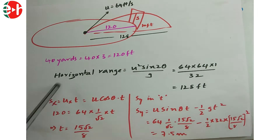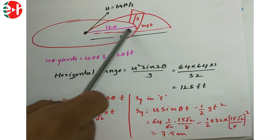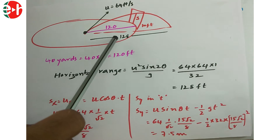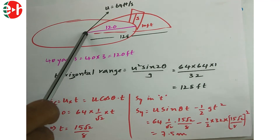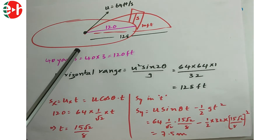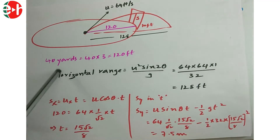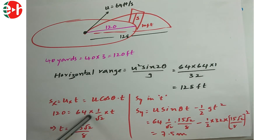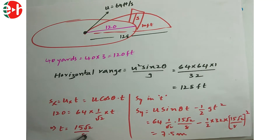Finding the time when horizontal displacement equals 120 feet: Sx = u·cos θ·t → 120 = 64×(1/√2)×t, giving t = 15√2/8 seconds. Now we calculate the vertical displacement at this time.